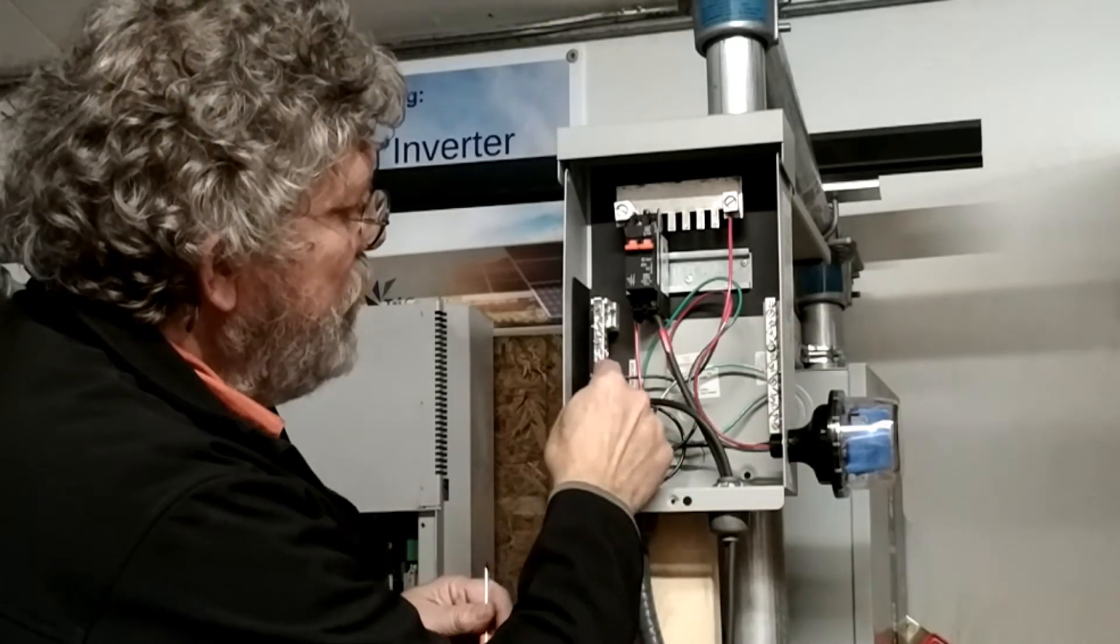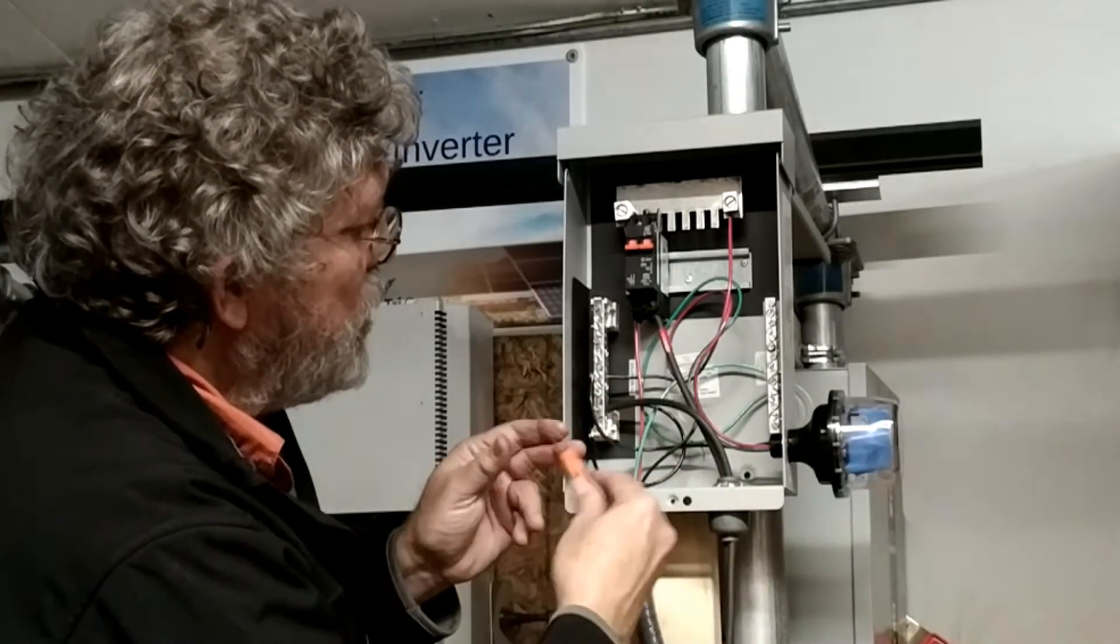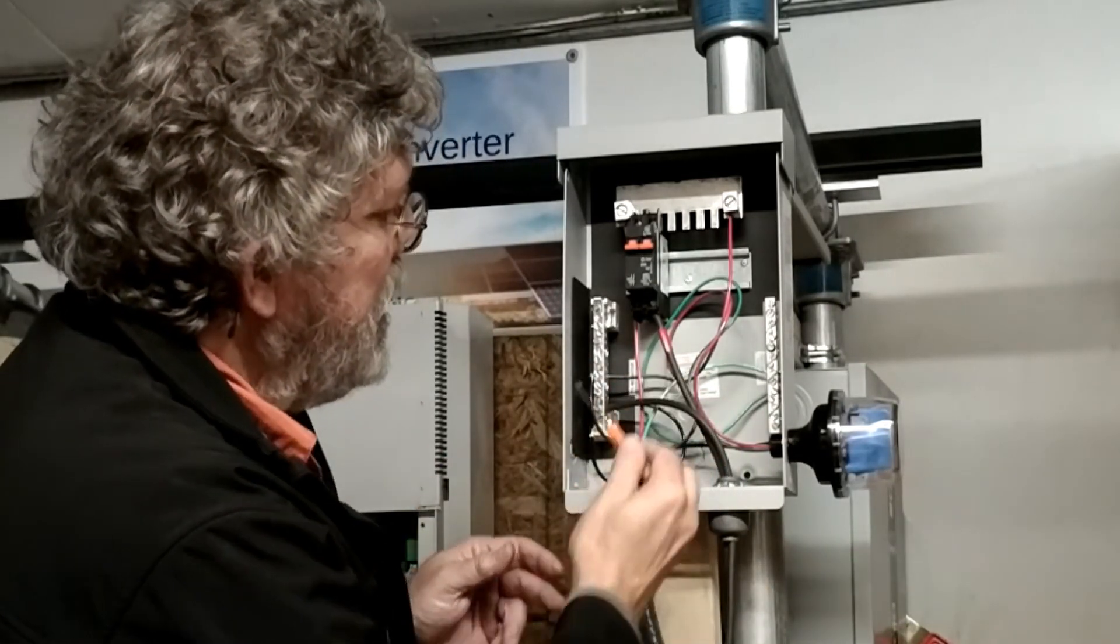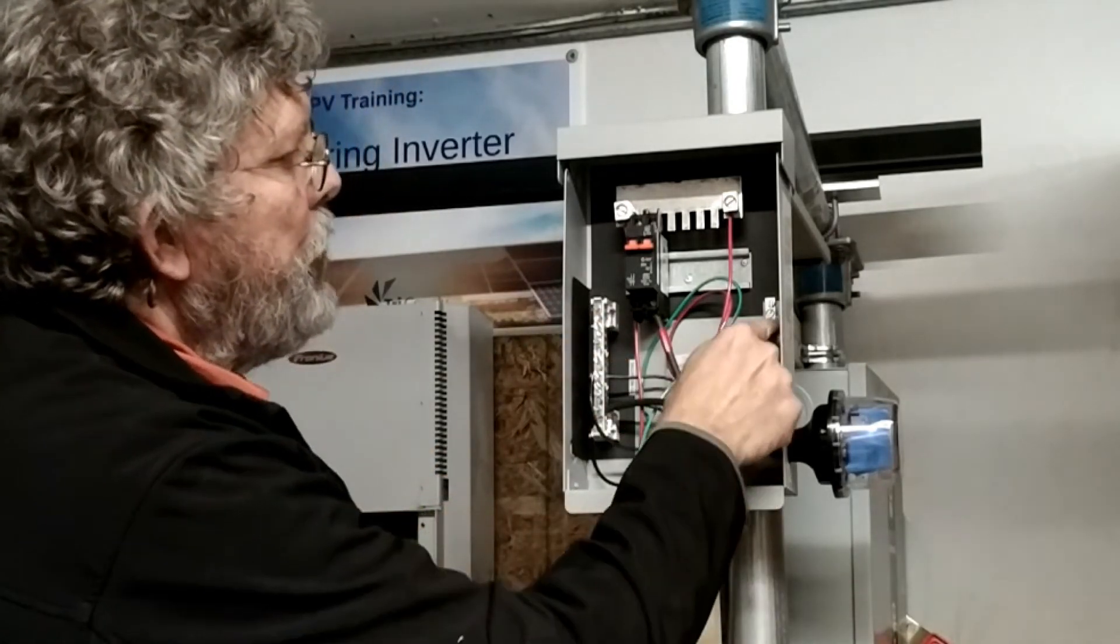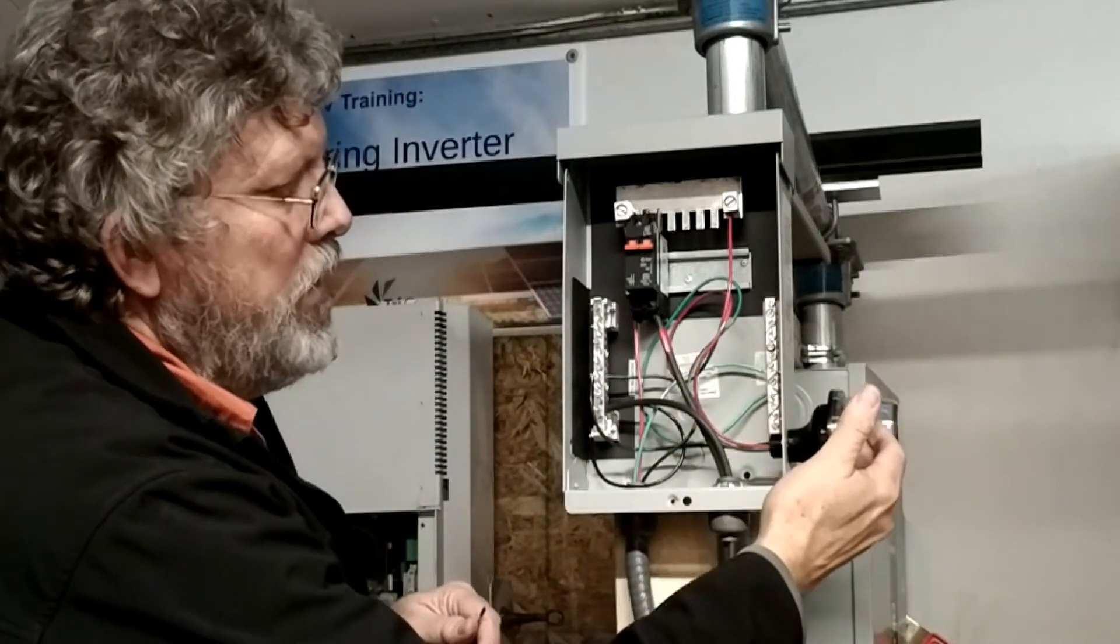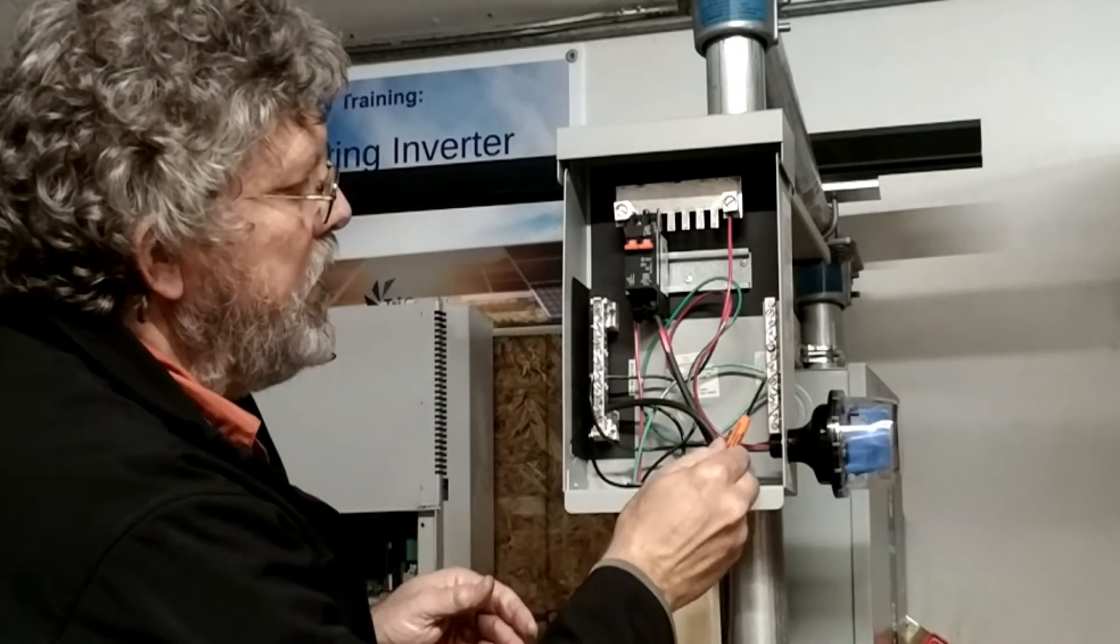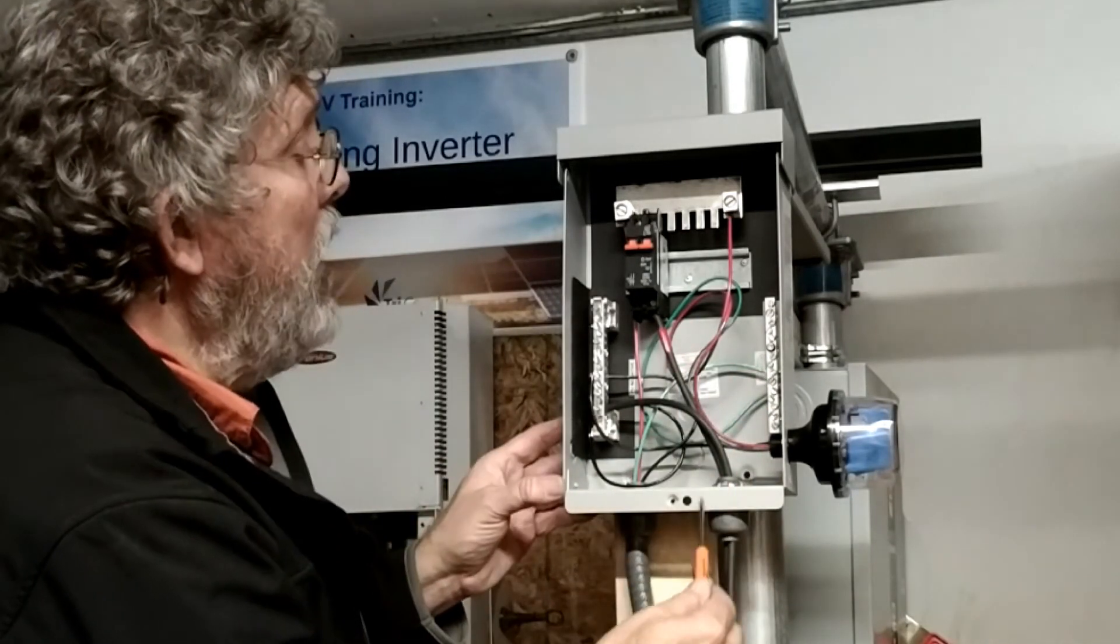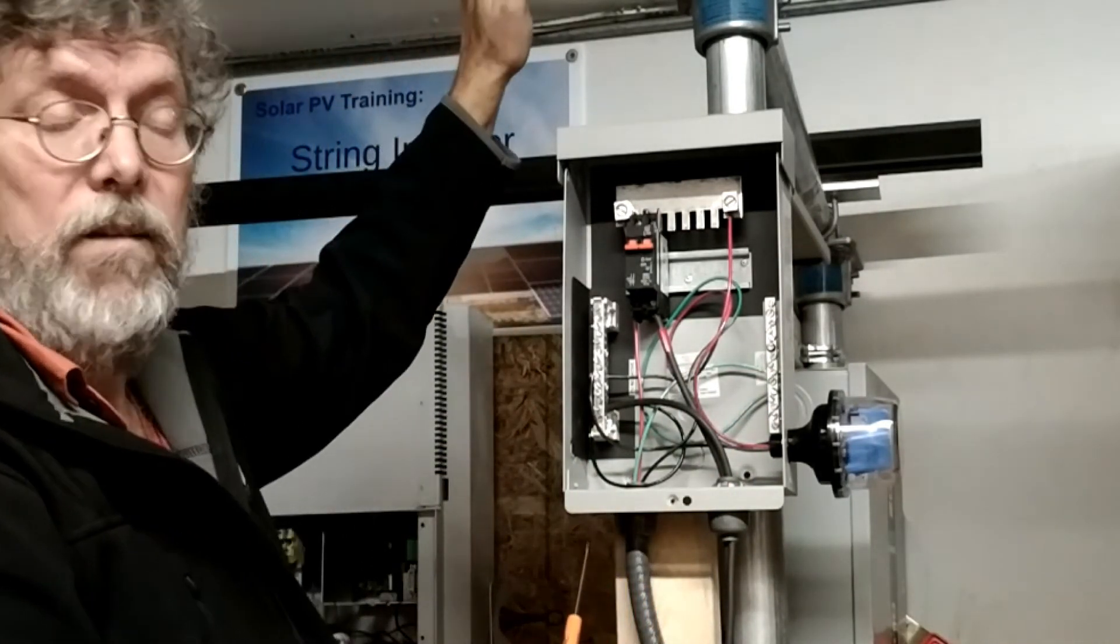The negative wires are all connected in this negative bus bar. So the surge protector negative, the negative from each string would be connected in here into the negative and then the grounding bus bar. The ground from the surge protector gets connected in here and the equipment ground, which is coming in from your PV array, would be connected into here.